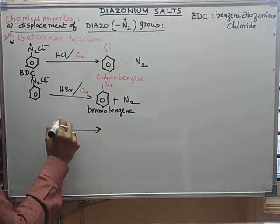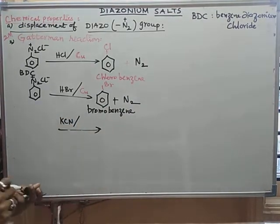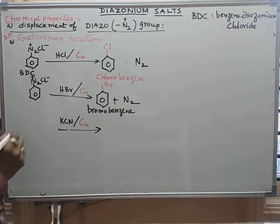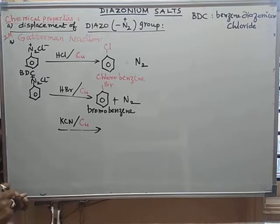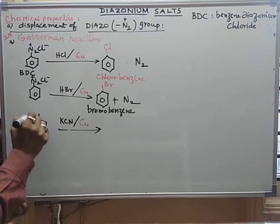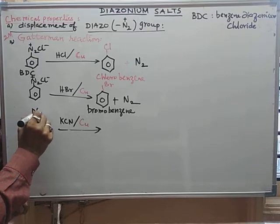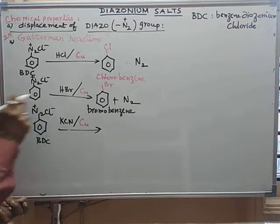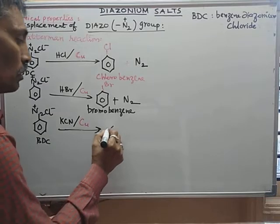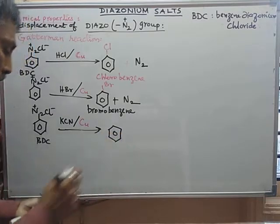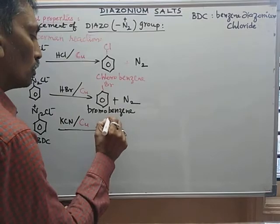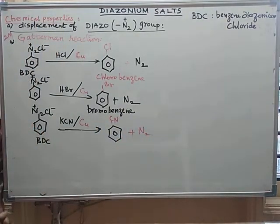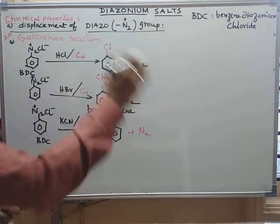If you treat benzene diazonium chloride with KCN in the presence of copper metal, you get cyanobenzene (the CN group is introduced on the ring) and N2 gas is liberated. This entire reaction is also known as the Gattermann reaction.